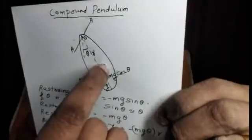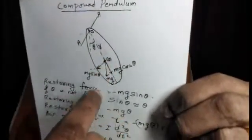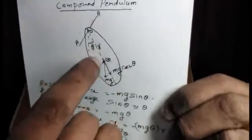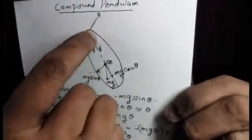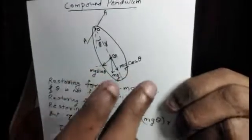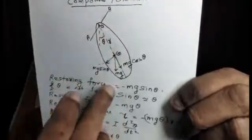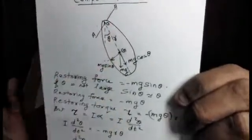This is the Center of Mass. This is the Center of Gravity, G. This is the Weight acting on it. This is the minimum potential energy position.